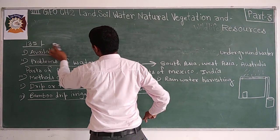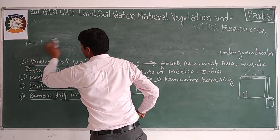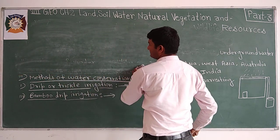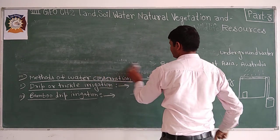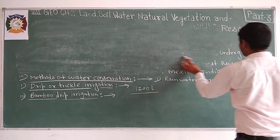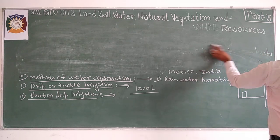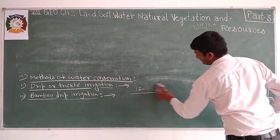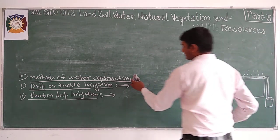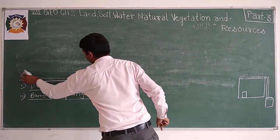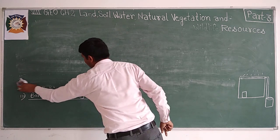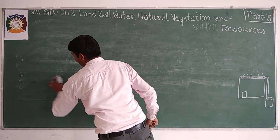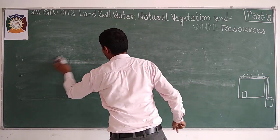Now let me discuss natural vegetation with you. All the trees, herbs, shrubs, and grasses that grow without the help or interference of human beings are known as natural vegetation. Here we will discuss the definition, distribution, and conservation of natural vegetation and wildlife resources.